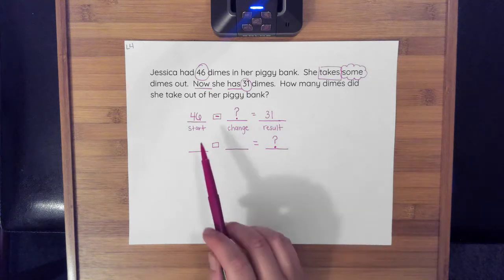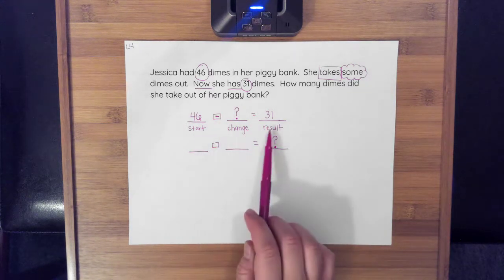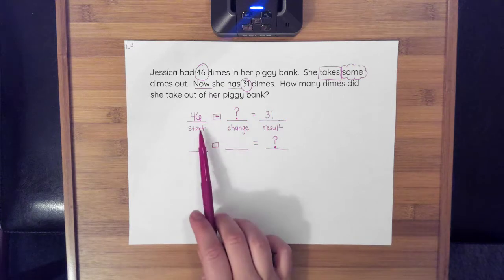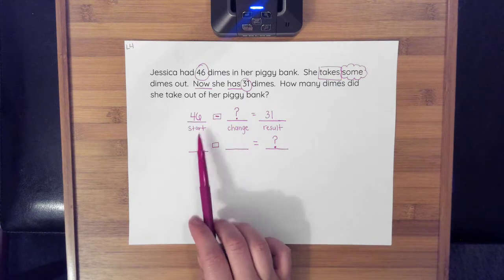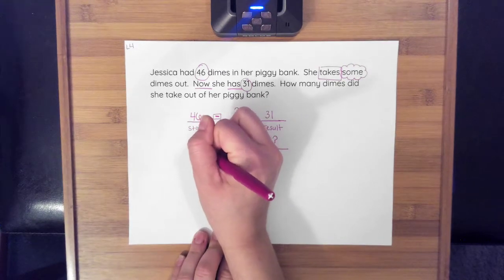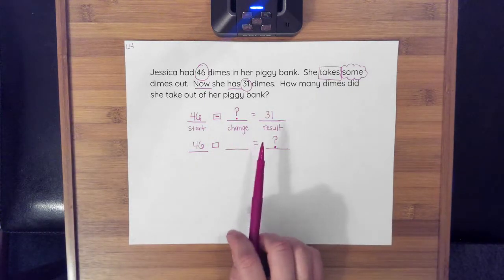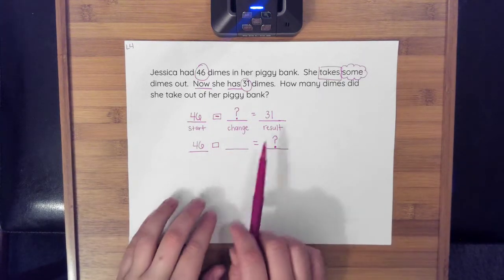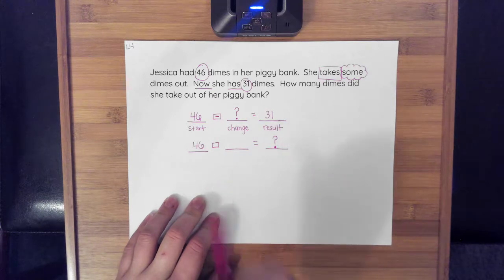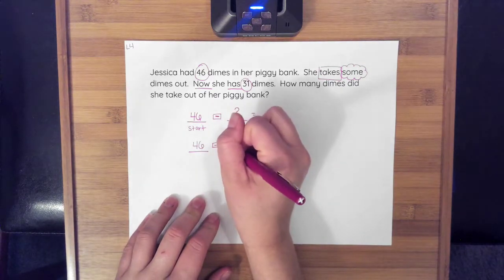So if I'm looking at 46, I'm going to 31. I know that I'm still going to stay with starting with 46—it's what I had to begin with. And when I look at what's left, I'm going to take 31 away because I want to subtract so I can figure out how many I took. So I have 46 minus 31 equals something.